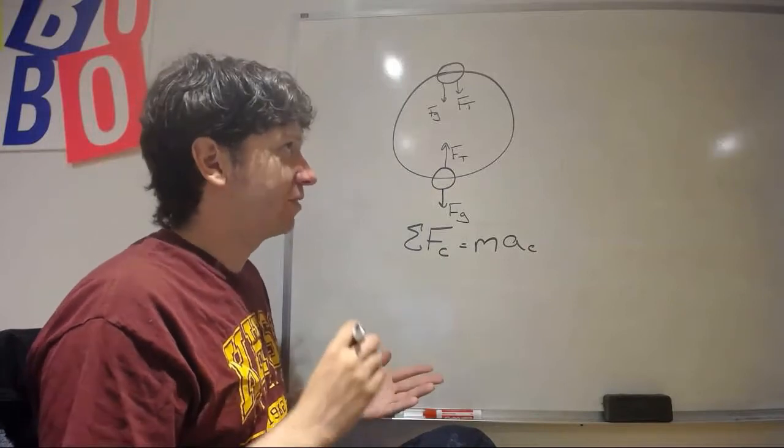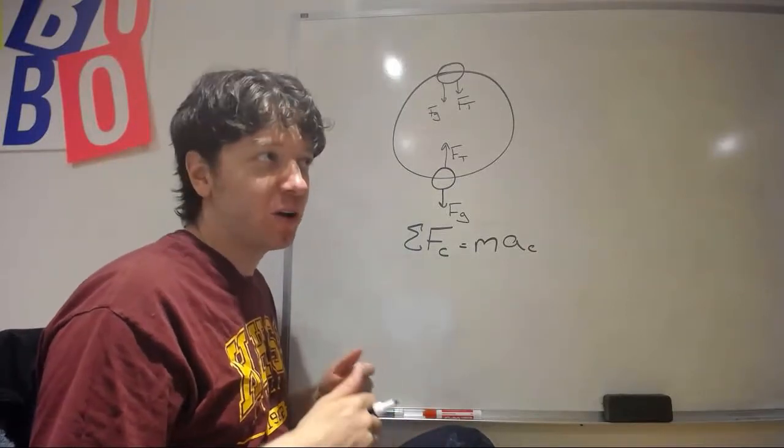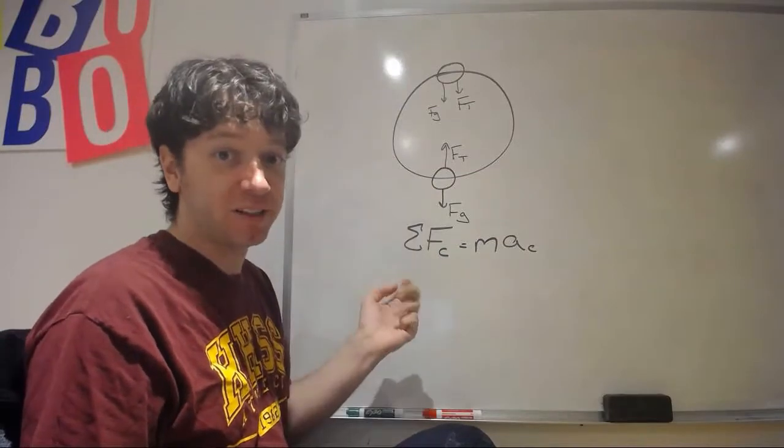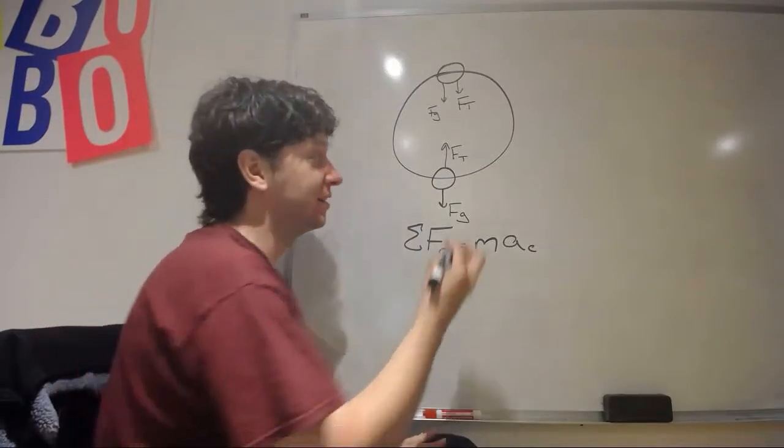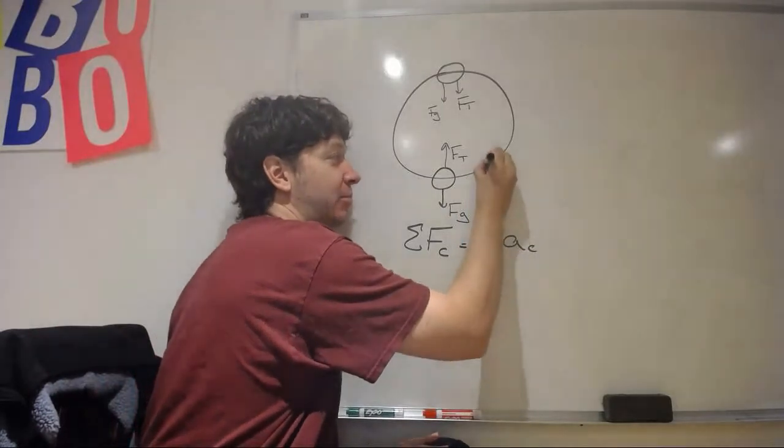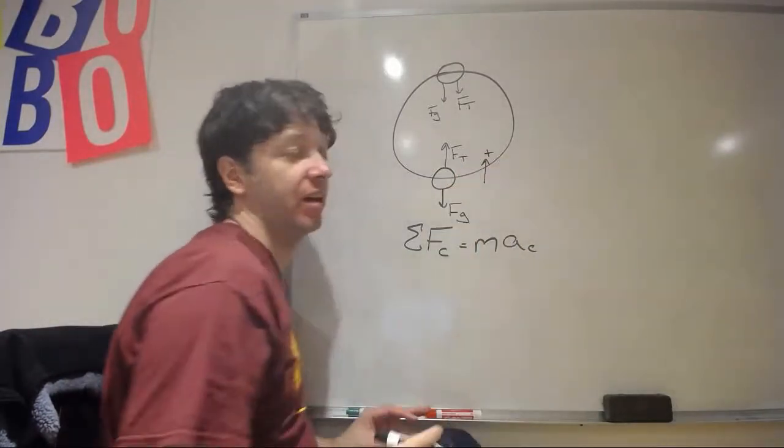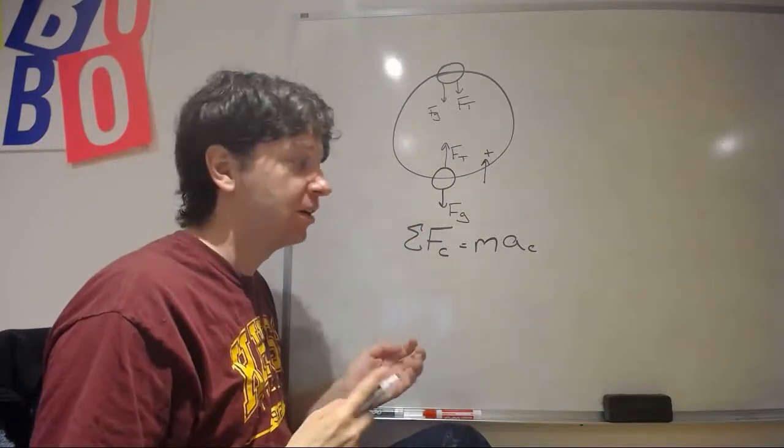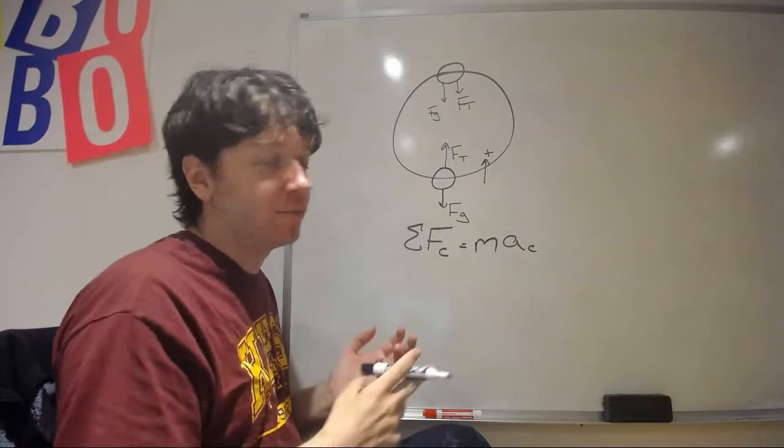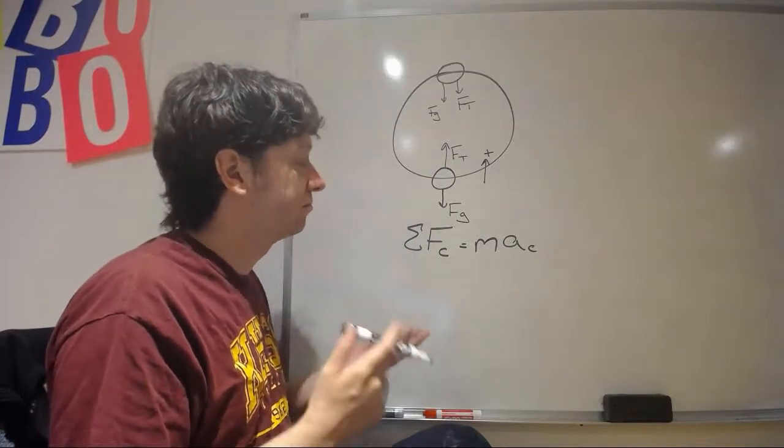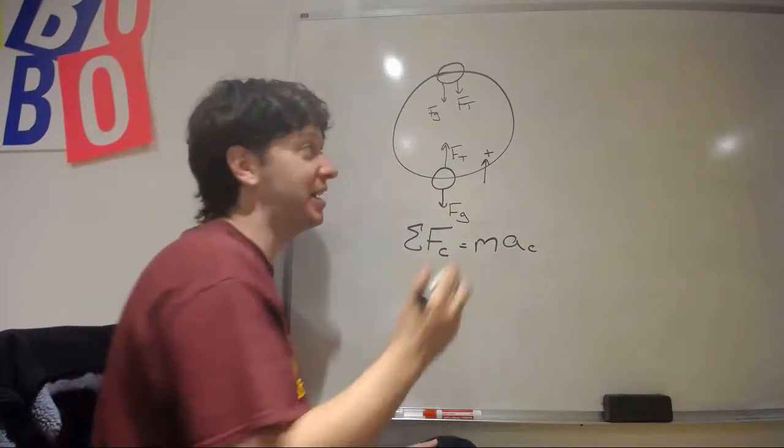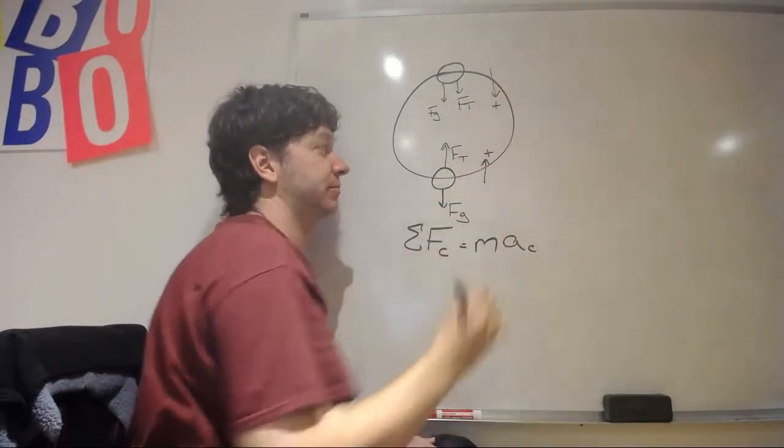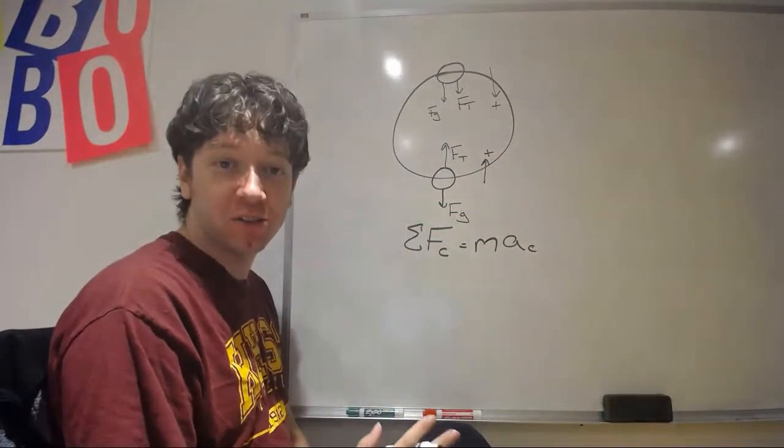And so, depending on what the problem is, if the problem is analyzing it at the bottom, then we'll draw a free body diagram at the bottom, and our coordinate system will say up is positive. If the question places the ball at the top of its circular motion, like a roller coaster at the top, then acceleration is actually down, so we're going to make down positive.